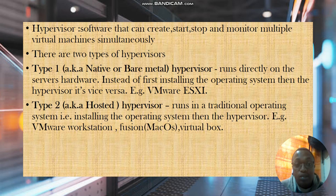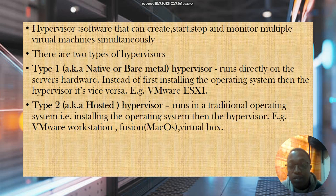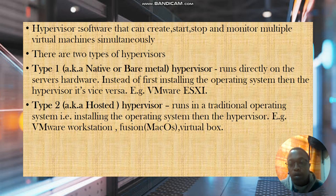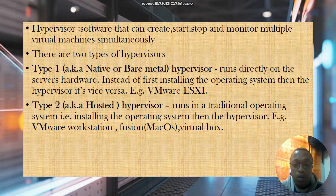There are two types of hypervisors. Type one is a hypervisor that runs directly on the server hardware — you install it just as you would an operating system, and it hosts multiple other operating systems on one server. So you could have a Windows server, a Linux server, and an Ubuntu server all running. This is what a bare metal hypervisor does.